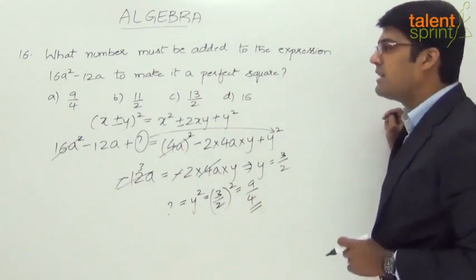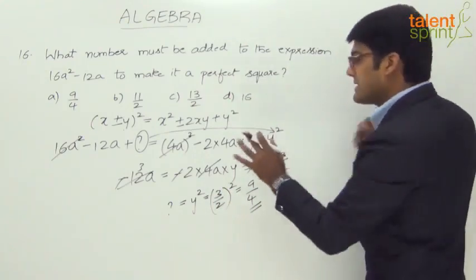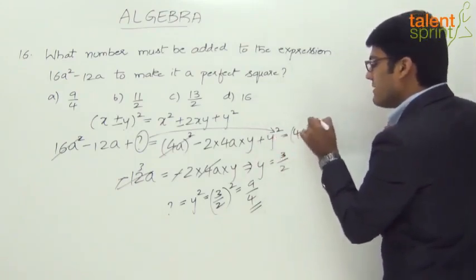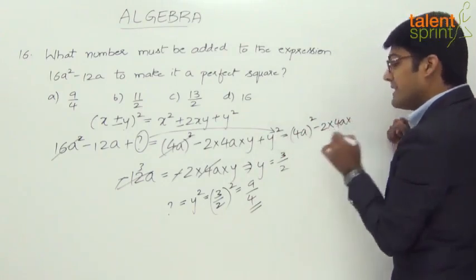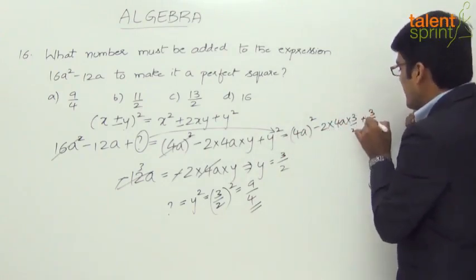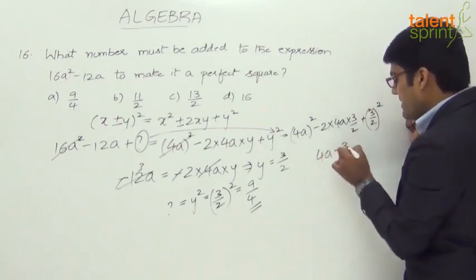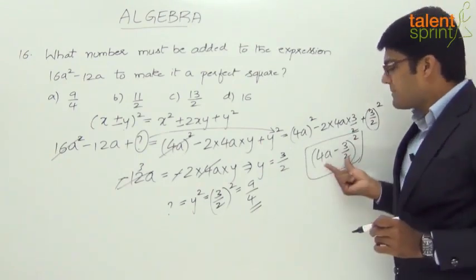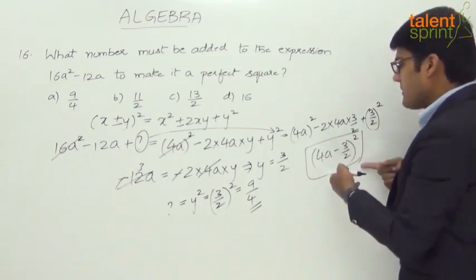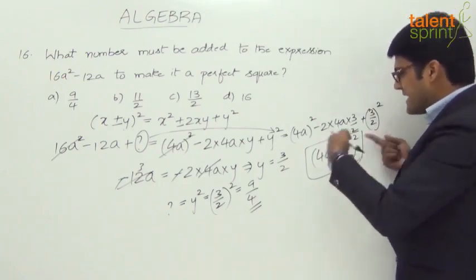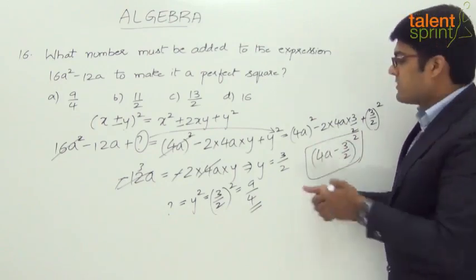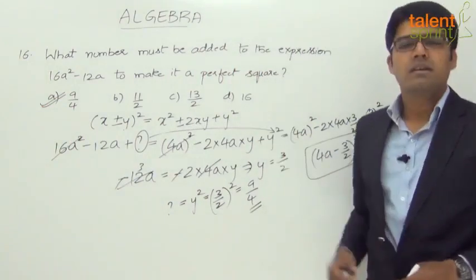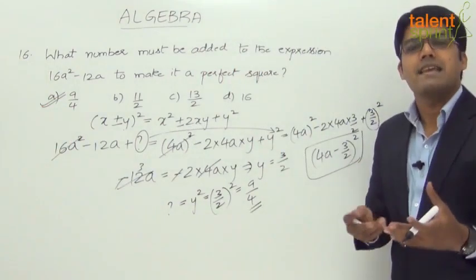By adding 9/4 to the given expression, it becomes a perfect square. Specifically, it becomes (4a)² - 2 × 4a × (3/2) + (3/2)², which is (4a - 3/2)². This is a perfect square for any value of a. So the answer is option A: 9/4.